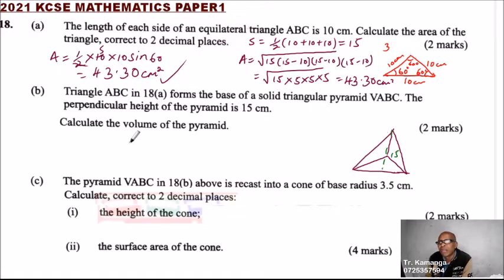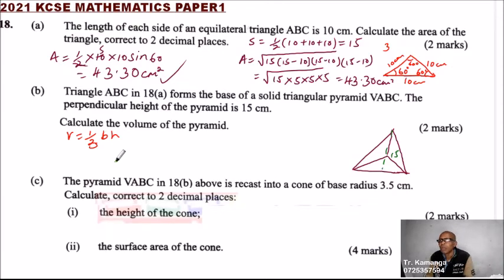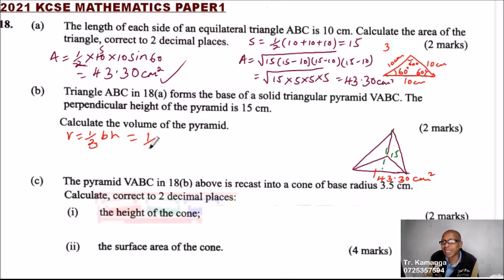The volume of a pyramid equals one third times base area times height. We already have the base area, which we calculated in Part A: 43.30 centimeters squared. So volume equals one third multiplied by 43.30, multiplied by the height which is 15.